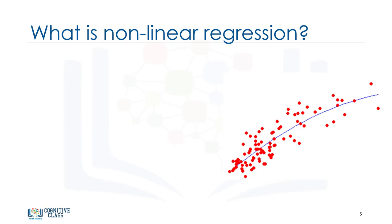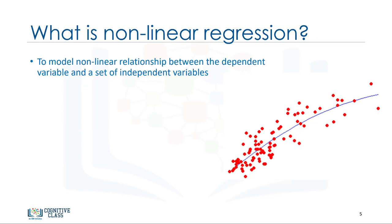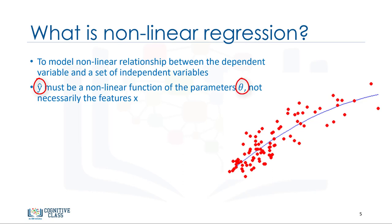So, what is non-linear regression exactly? First, non-linear regression is a method to model a non-linear relationship between the dependent variable and a set of independent variables. Second, for a model to be considered non-linear, y hat must be a non-linear function of the parameters theta, not necessarily the features x.